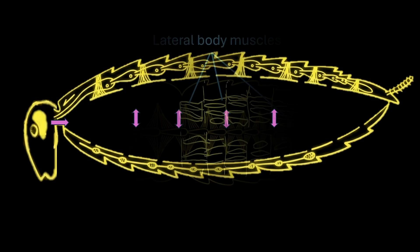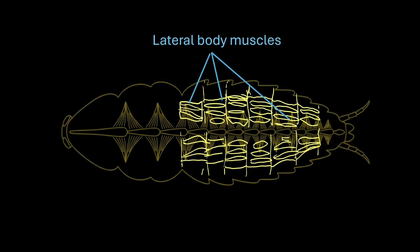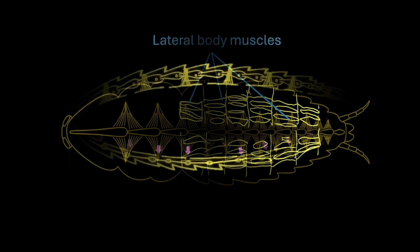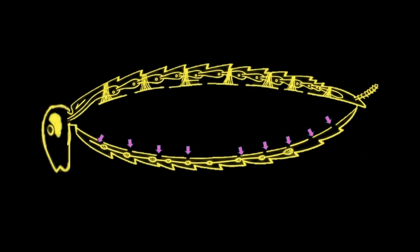Apart from the alary muscles, there are a pair of lateral body muscles in each segment. These muscles, upon contraction, press the body cavity, pushing the hemolymph through the open spaces in the hemocele.